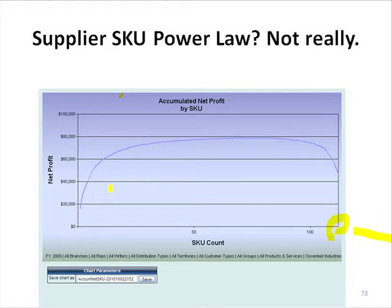This particular supplier was chosen because you'll notice that right here they're generating about $50,000 in net operating profit. This is the same company that was doing $200,000 in operating profit for the whole company, so here's one supplier generating 25% of their operating profit.